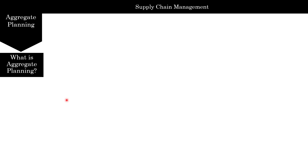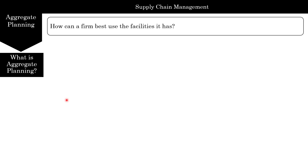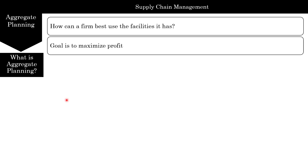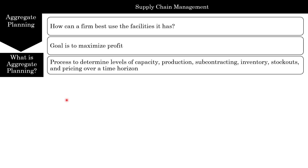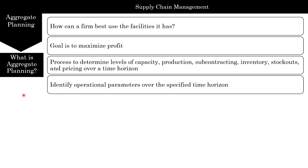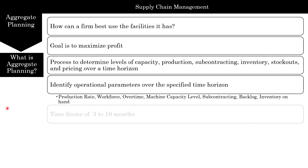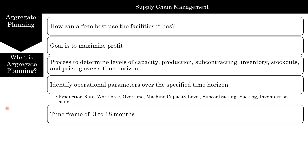Aggregate planning is essentially a plan to help firms best use the facilities they have, and the goal is to maximize profit. We determine levels of capacity, production, subcontracting, inventory, stockouts, and pricing over a time horizon. The parameters include production rate, workforce over time, machine level capacity, subcontracting, backlog, and inventory at hand. The time frame we're looking at is about three to 18 months — more usually, people use about half a year to a year.